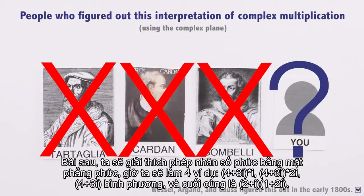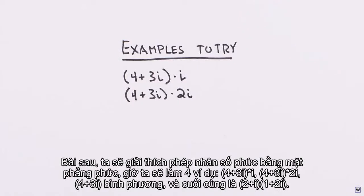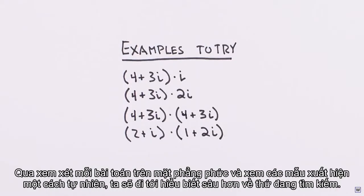Next time we'll uncover this interpretation of complex multiplication using the complex plane, and we're going to do it with four examples: 4 plus 3i times i, 4 plus 3i times 2i, 4 plus 3i times itself, and finally 2 plus i times 1 plus 2i. Through considering each of these problems on the complex plane and looking at the patterns that naturally emerge, we'll arrive at the deeper meaning we're searching for.